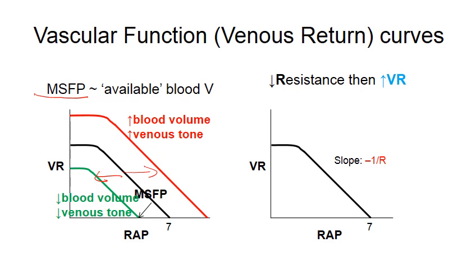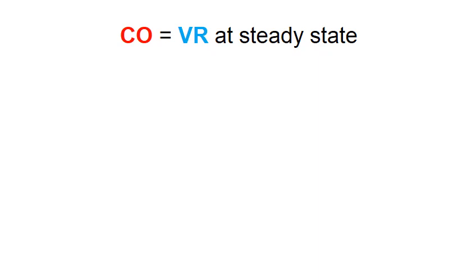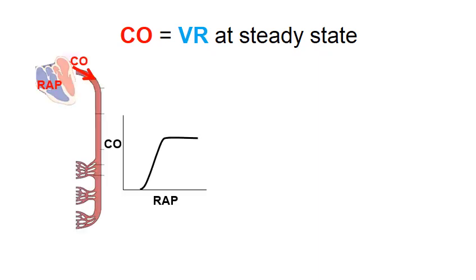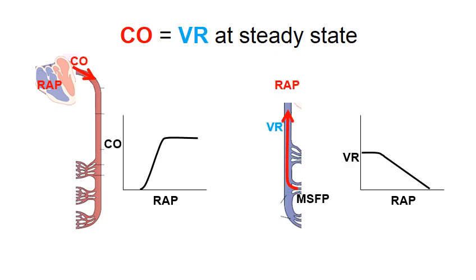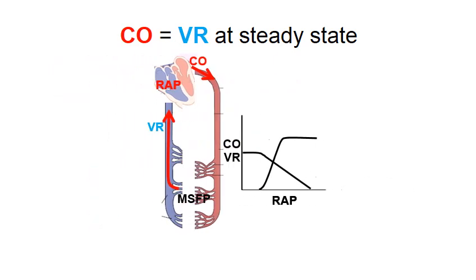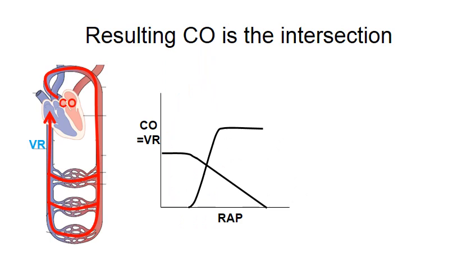On the other hand, if the resistance changes, then the venous return can be easier if the resistance is decreased and can be harder if the resistance is increased. At steady state, the cardiac output and the venous return have to match. We can represent both cardiac function and vascular function curves on one graph. The intersection of the two curves represents the steady state cardiac output and venous return. Reading off the horizontal axis, you can also get the steady state right atrial pressure.